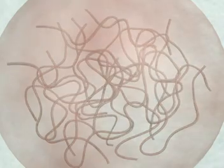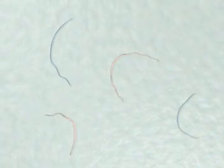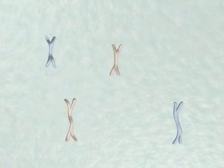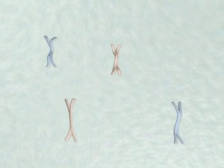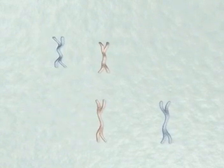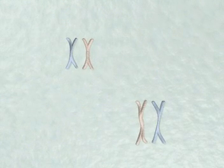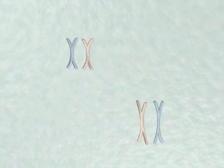Imagine a cell with just four chromosomes. As with mitosis, each produces an identical copy of itself. Chromosomes belong in pairs. One half of the pair, shown in blue, will originally have come from the father. The other one is from the mother.